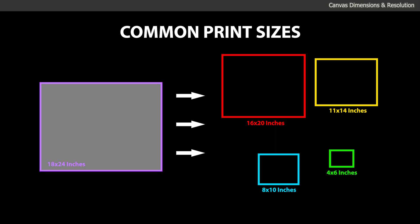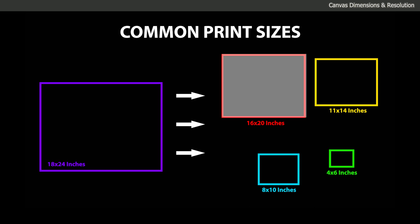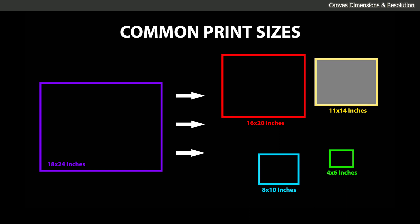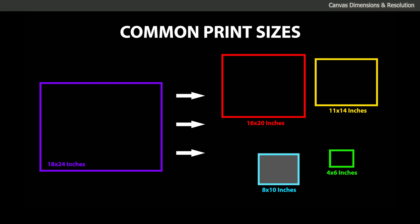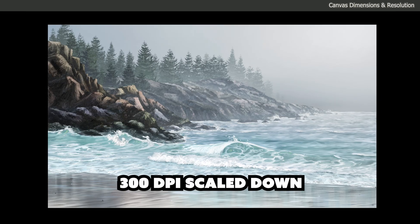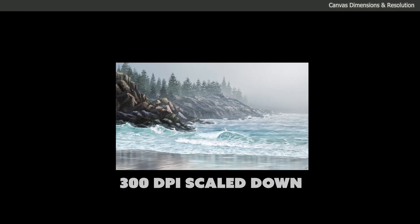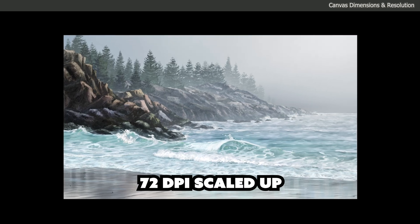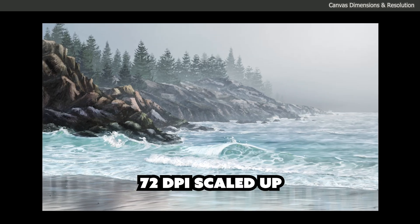Using a common print size also maintains a consistent aspect ratio as you scale the image up or down. For example, if you create a canvas that is 18 by 24 inches, you can scale the print to smaller sizes like 16x20, 11x14, and 8x10 without cropping too much. When deciding on a canvas size, try to consider the largest you might want to print the artwork, because reducing the size won't affect quality, but enlarging it will make the image blurry and pixelated.